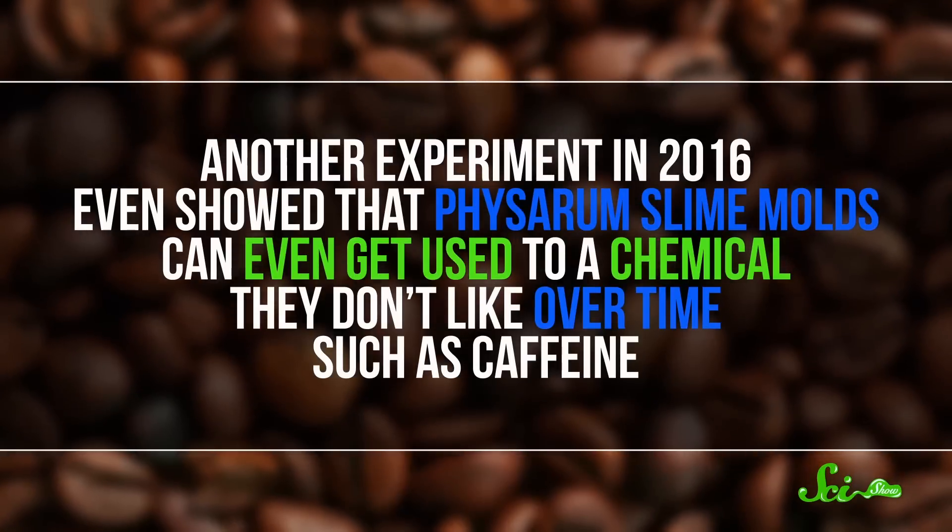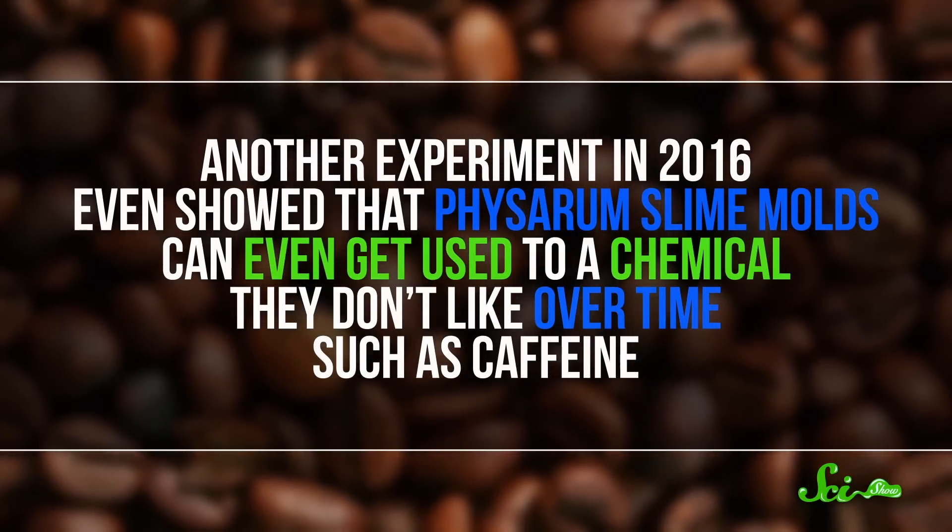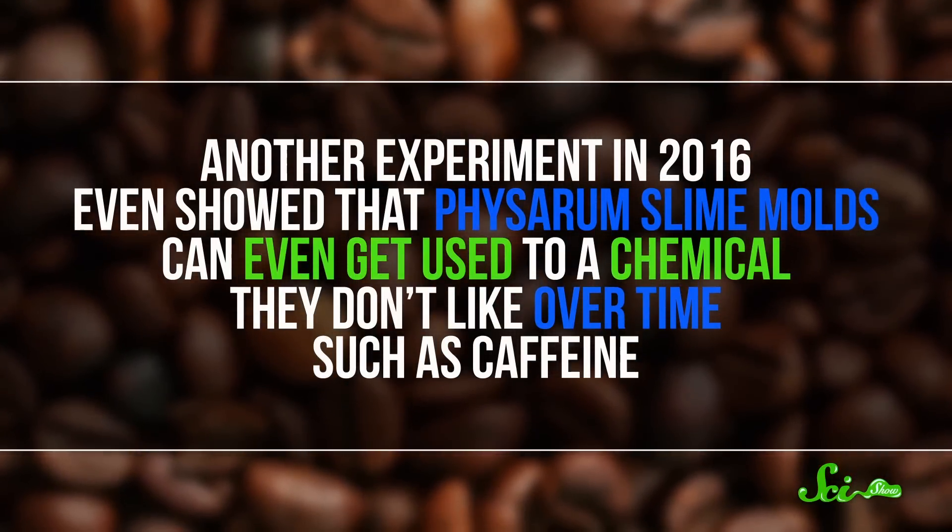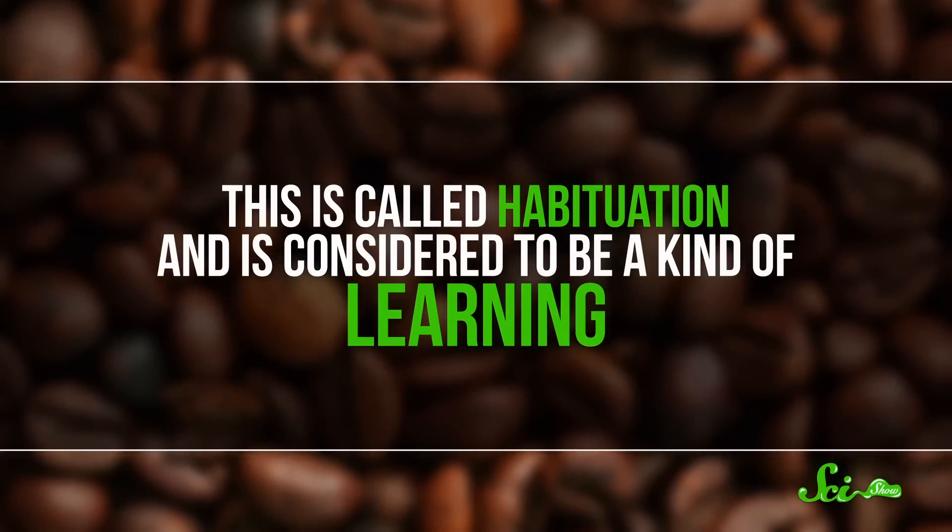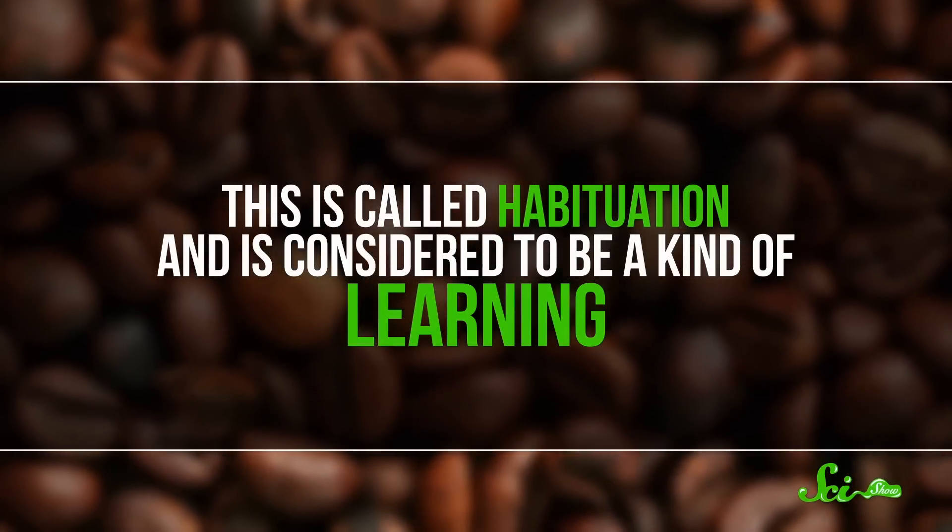Another experiment in 2016 showed that Physarum slime molds can even get used to a chemical they don't like over time, such as caffeine. This is called habituation, and is considered to be a kind of learning. And when these habituated slime molds fuse with a buddy, they can share things they've learned, so the bigger, new blob behaves just like the habituated one.